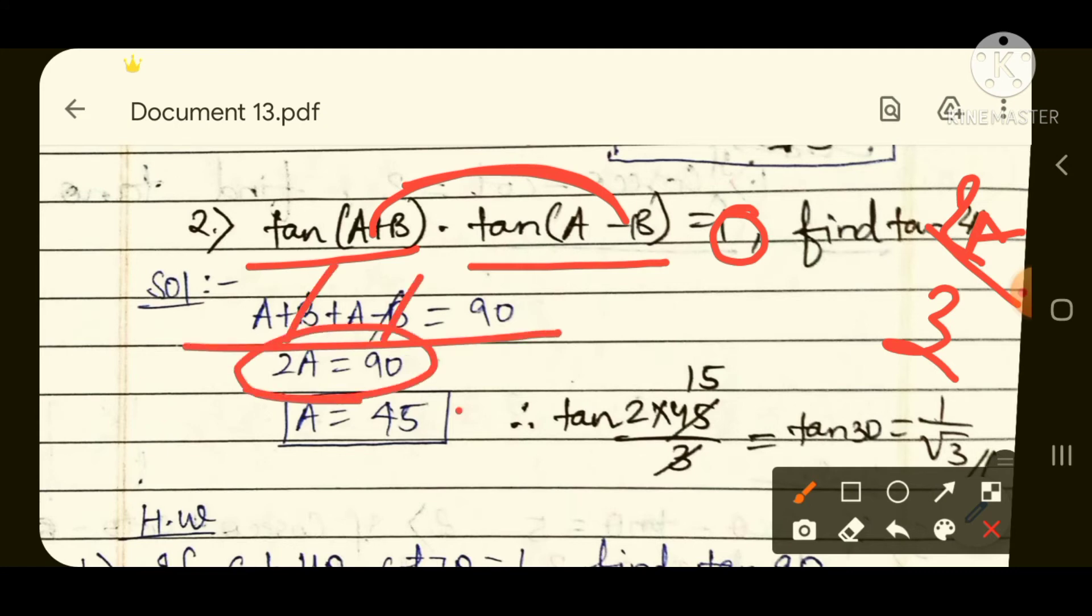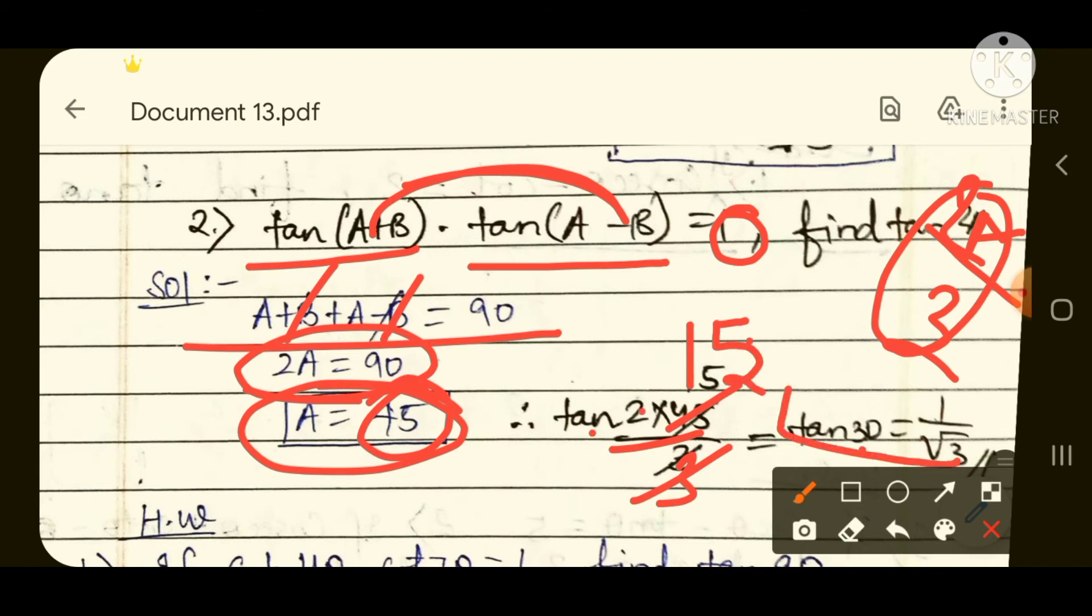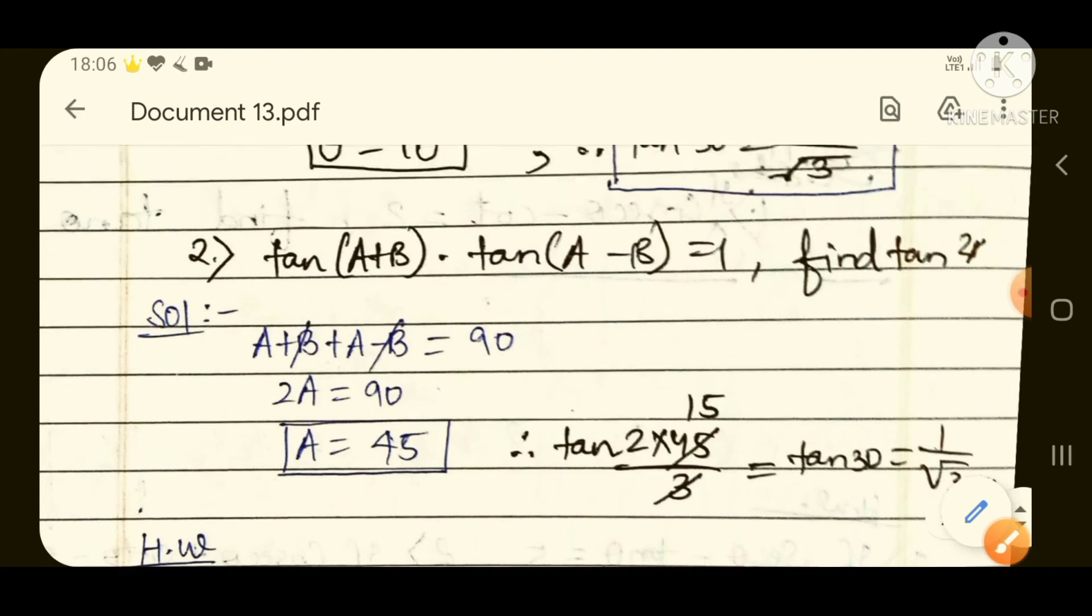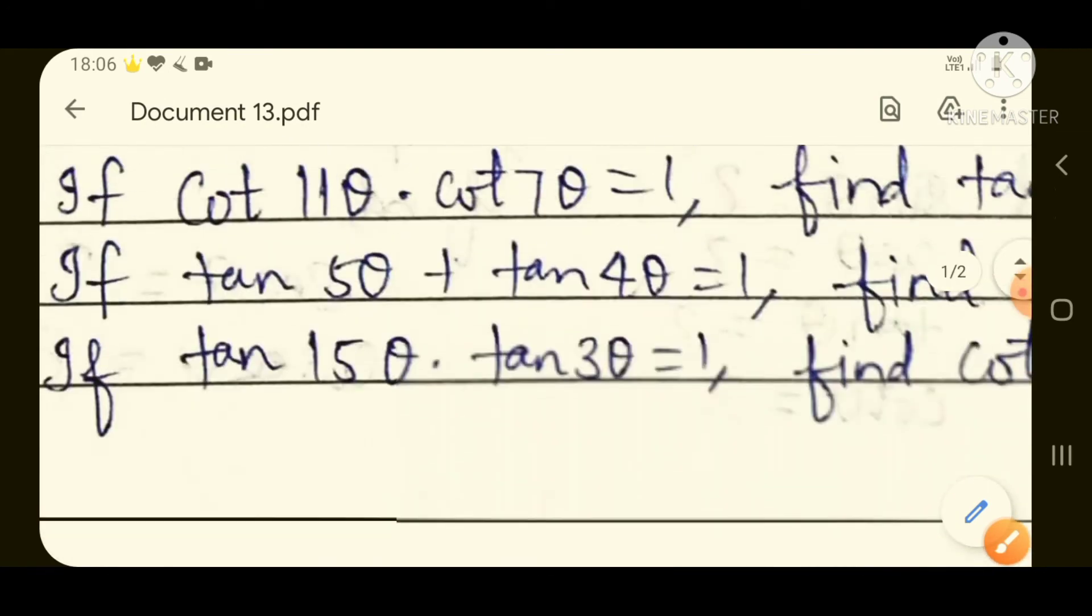So again see, we got tan theta 1 times tan theta 2 equals 1, so we will add both angles and equal to 90. So A plus B plus A minus B equals 90, so B minus B will get cancelled, so 2A equals 90, so A equals 45. We are asked tan 2A by 3, so instead of A we will put 45. So tan 2 times 45 by 3, which gives us tan 30. Again, the answer is 1 by root 3.